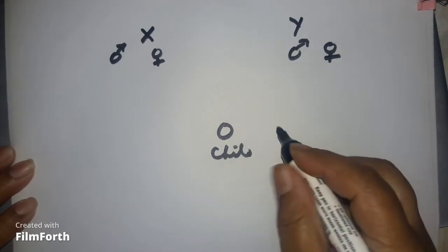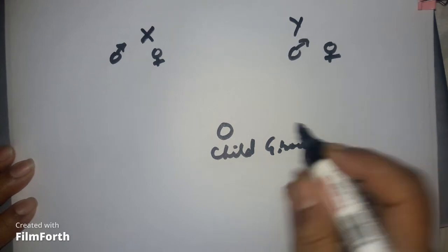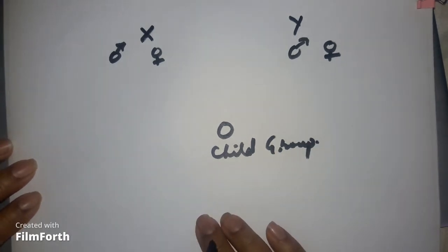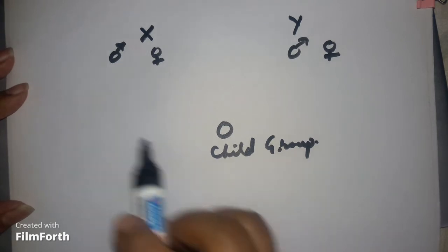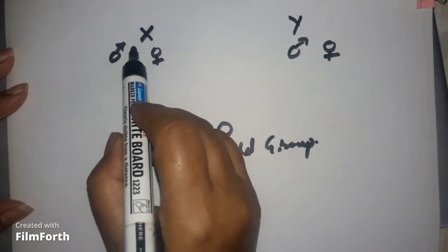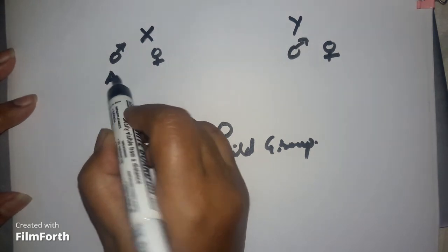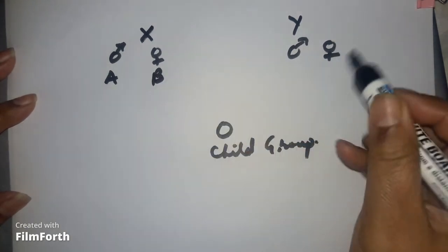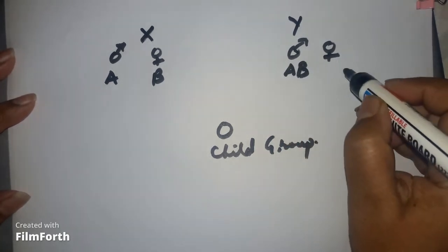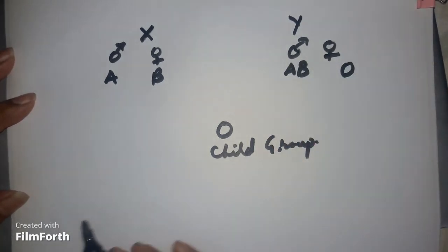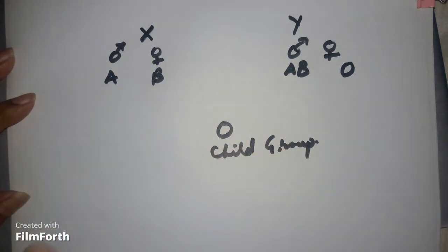The child's blood group is O. In the exam you will be asked to explain whose child this is. The blood group of Mr. X is A, the blood group of Mrs. X is B, and the blood group of Mr. Y is AB. You will explain this with the help of a cross.